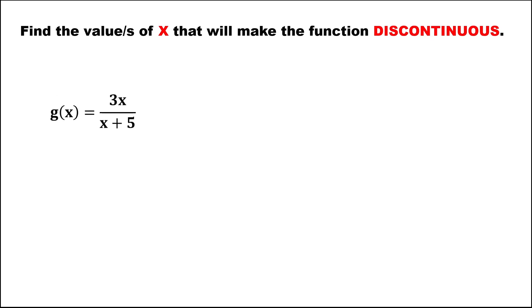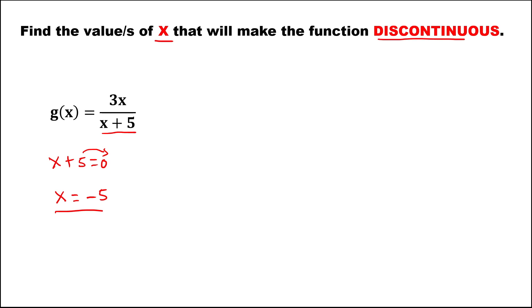For this second function, we just need to focus on the denominator and equate it to 0. Solving for x gives x equals negative 5. So if x equals negative 5, the denominator becomes 0, and the function becomes undefined. Therefore, the value of x that will make this function discontinuous is x equals negative 5.